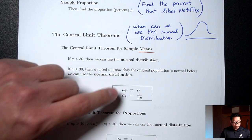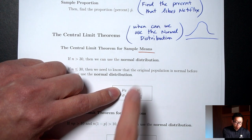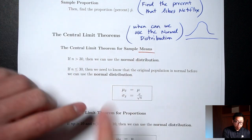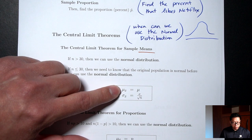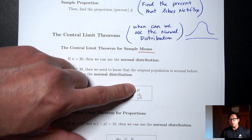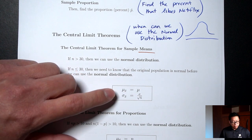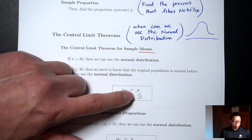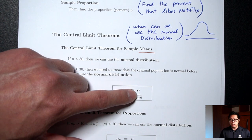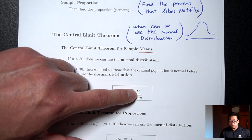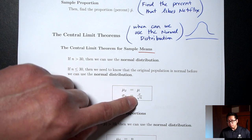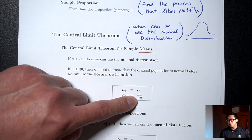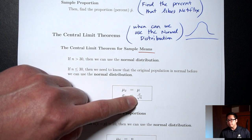The central limit theorem also tells you what mean and standard deviation to use when you use the normal distribution. For the mean situation, the mean you should use is the original population mean. The standard deviation you should use is the original standard deviation of the population divided by the square root of n, which is the sample size.